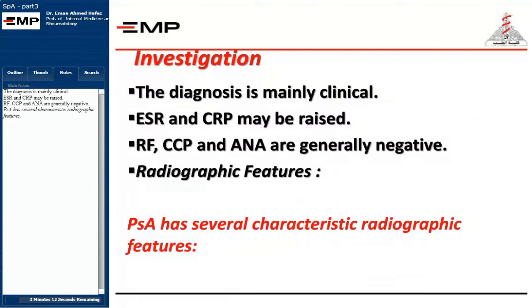ESR and CRP may be raised. RF, CCP, and ANA are generally negative.